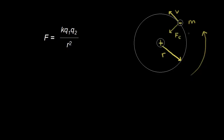We can find the electric force by using Coulomb's Law. The electric force is equal to K, which is a constant, times Q1 — the charge on the proton — times Q2 — the charge on the electron — divided by the distance between those two charges squared. Plugging in what we know: K is some constant, Q1 is the charge on the proton which we call E (elemental charge), and Q2 is the charge on the electron, which has the same magnitude as the proton but is negative, so we put in negative E.